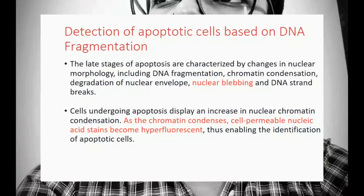Detection of apoptotic cells based on DNA fragmentation: the late stages of apoptosis are characterized by changes in nuclear morphology, including DNA fragmentation (DNAs inside the cell get broken into pieces), chromatin condensation, degradation of the nuclear envelope (the nuclear membrane gets degraded), nuclear blebbing, and DNA strand breaks. The nucleus becomes fragmented and DNA strand breaks occur.